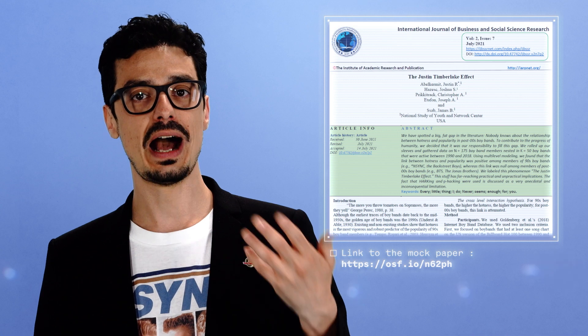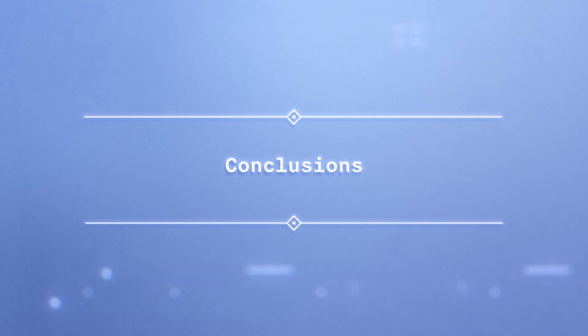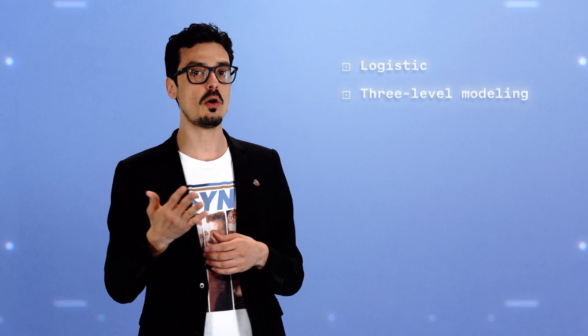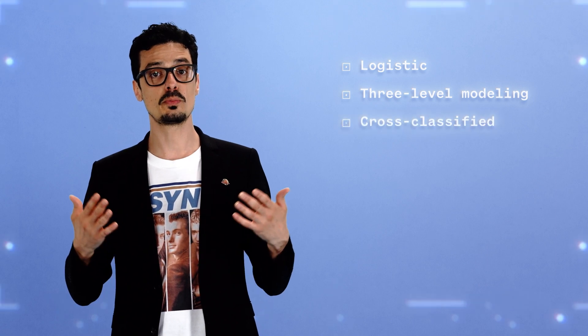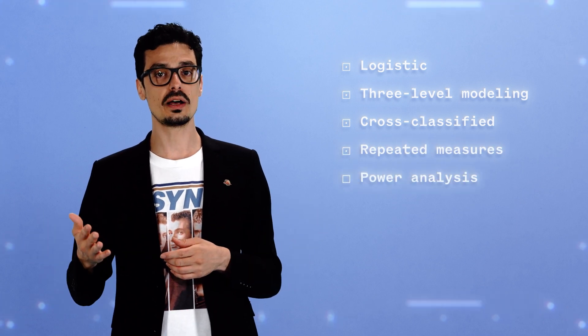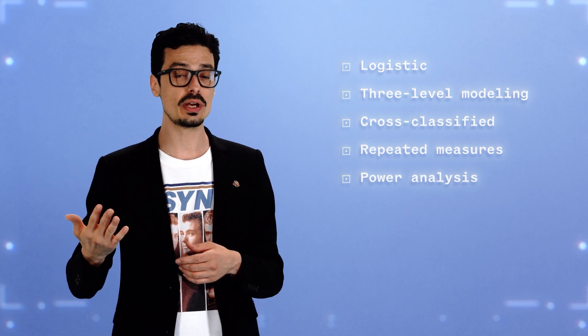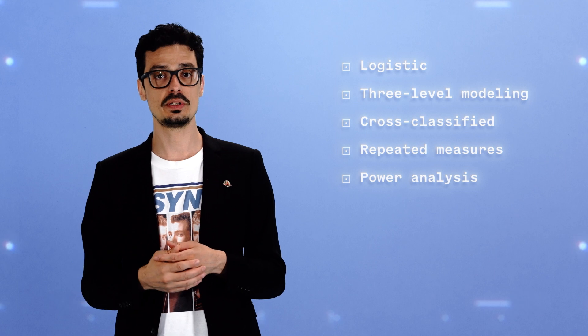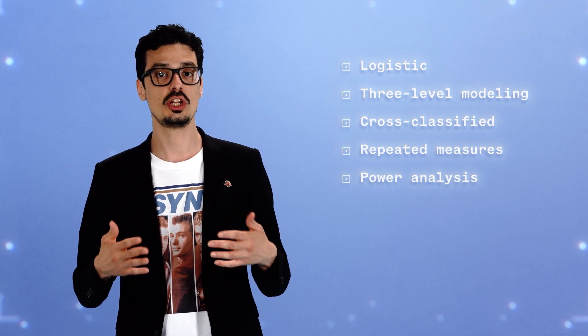These results are presented in a mock paper published in a predatory journal. Despite its absurd nature, the paper offers a good example of how to report multilevel analysis. This video serves as an introduction to multilevel modeling. The link to the tutorial on which this video is based can be found in the description, along with resources related to multilevel logistic regression, multilevel modeling involving three or more levels, cross-classified models, application of multilevel modeling to repeated measures and longitudinal data, and sample size in multilevel modeling — where you will learn that a minimum of 125 clusters with 25 participants per cluster is required to detect a typical cross-level interaction of the kind presented in this video.